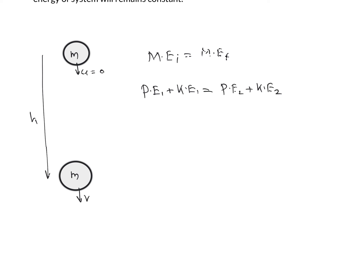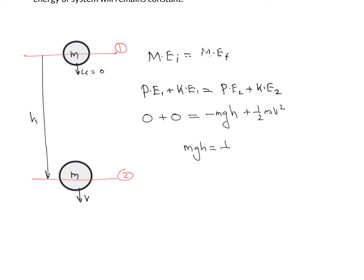Taking point 1 as reference and point 2 after travelling distance h downward: PE_final = −mgh and KE_final = ½mv². Substituting: 0 + 0 = −mgh + ½mv², which gives mgh = ½mv², and from this relation we can find the value of velocity.